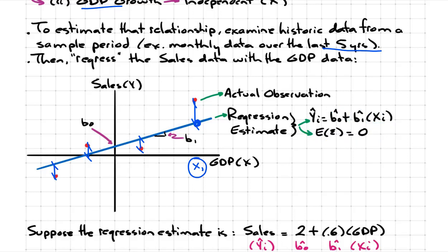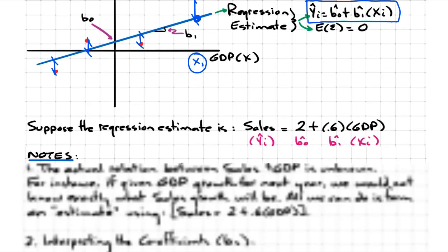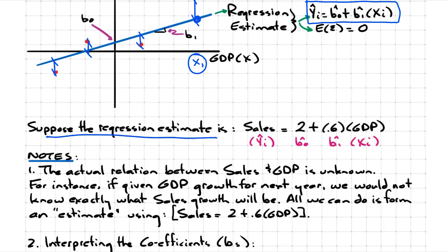This here is your regression equation — the exact same thing as the equation of a linear line. Suppose that the regression estimate is as follows: sales is equal to 2 plus 0.6 times GDP. We're using this regression framework, so this would be the estimate for the dependent variable, this is the intercept term, that's the slope coefficient, and this of course is the independent variable.